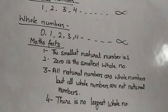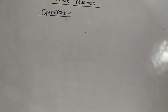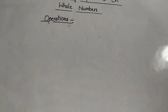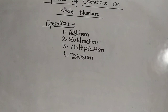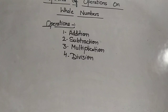Now, coming to the main topic: properties of operations on whole numbers. Let us see what are the operations. We are talking about mathematical operations. An operation on two numbers is a way of dealing with two numbers to obtain a result. The basic operations are addition, subtraction, multiplication, and division.